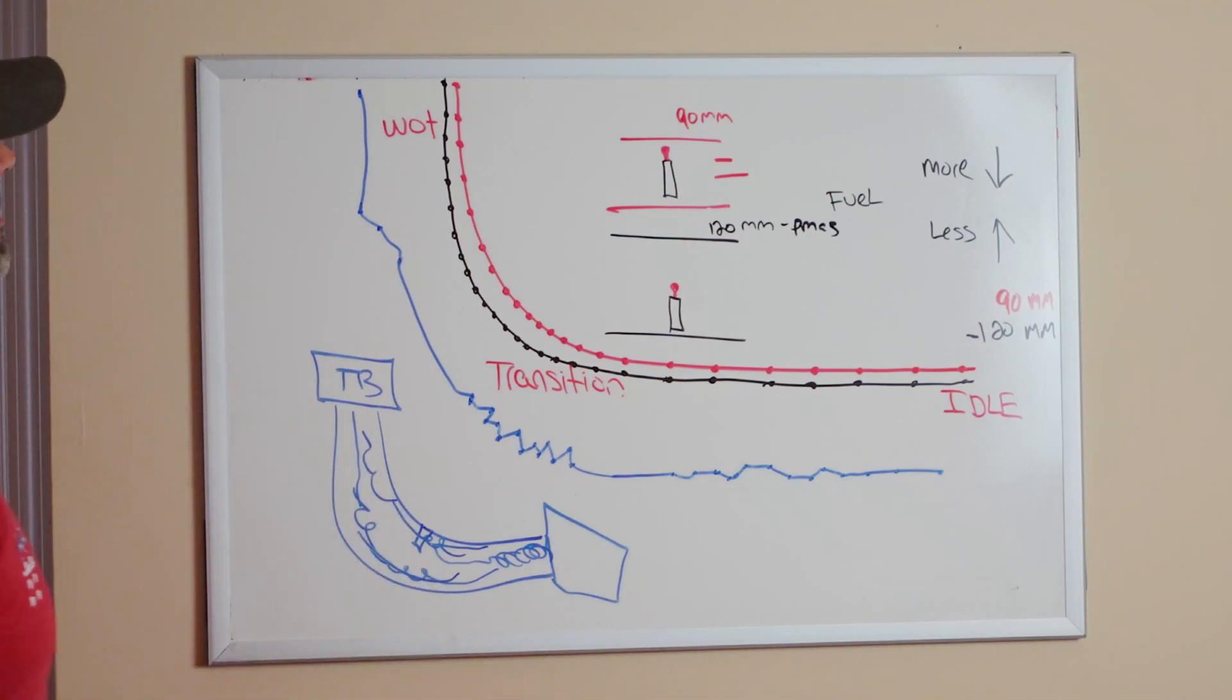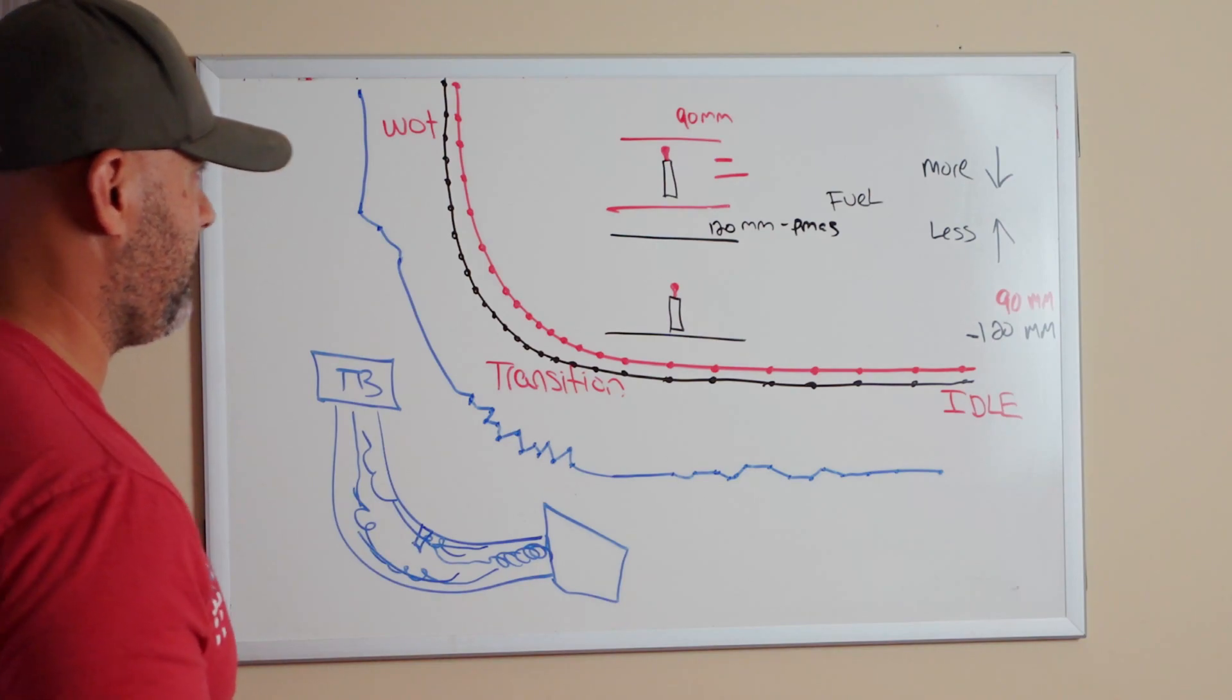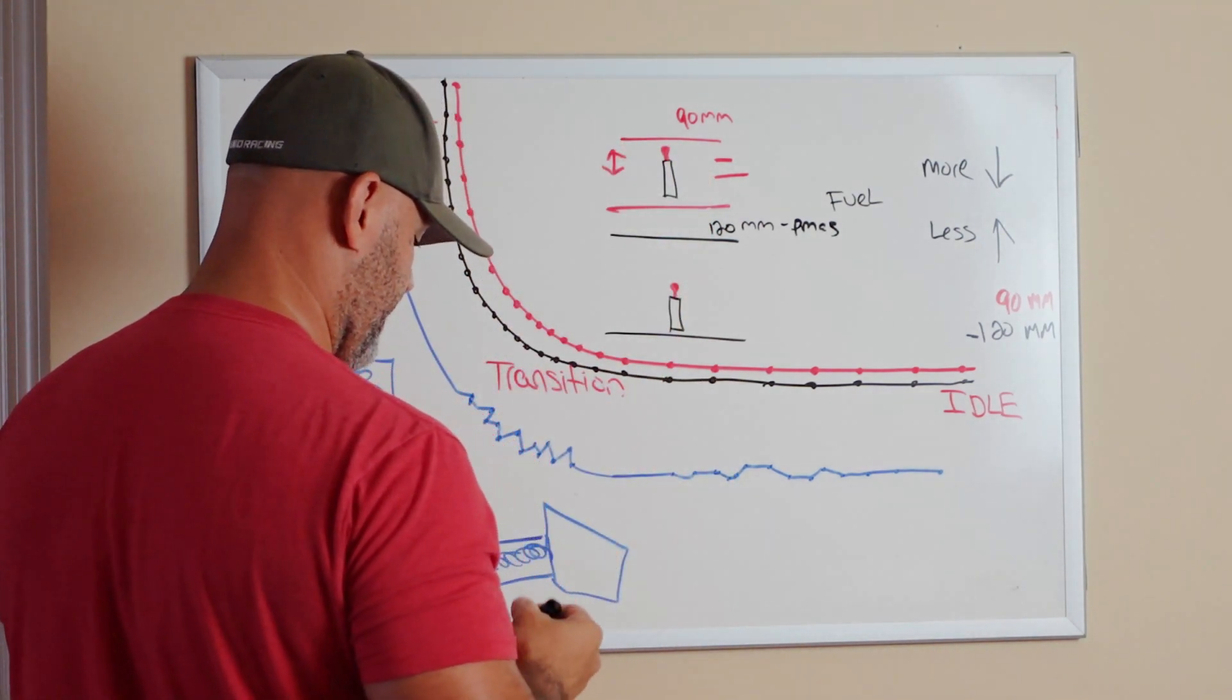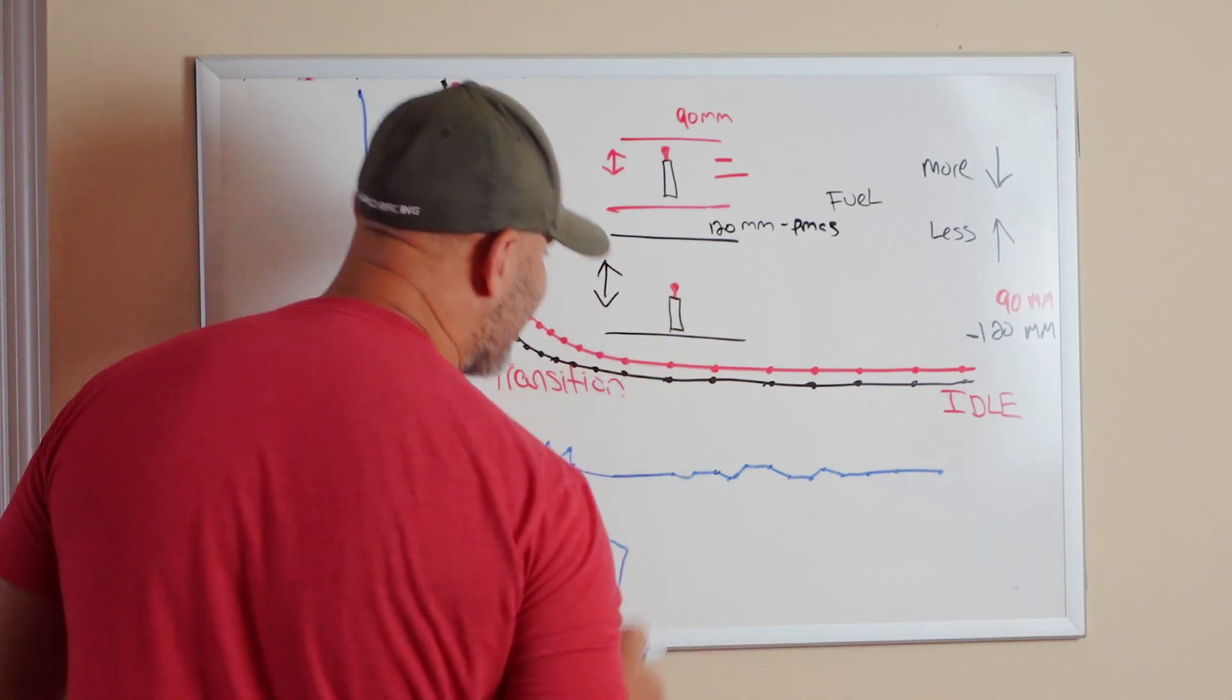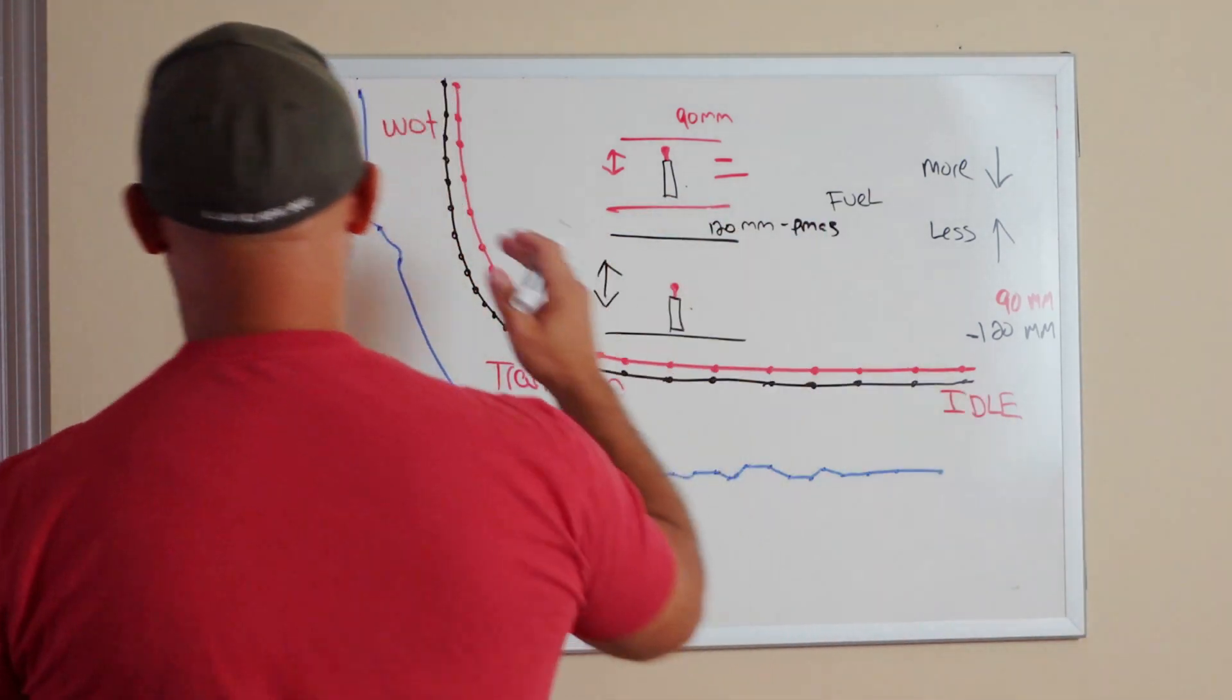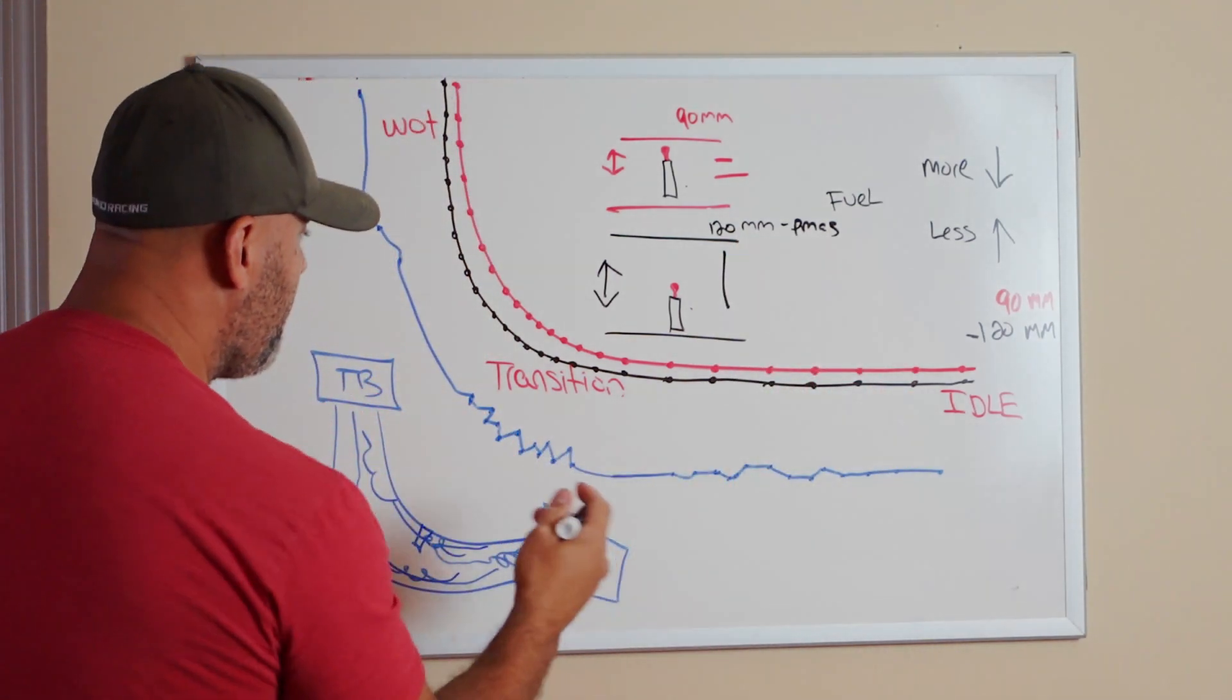A lot of people are confusing mass with velocity. I am not going to get too scientific; I'm just going to make it as simple as possible. If there's a 90 millimeter housing and a 120 millimeter housing, there is a big difference in mass. And this is a mass airflow sensor, not a velocity sensor, not a speed sensor—mass.